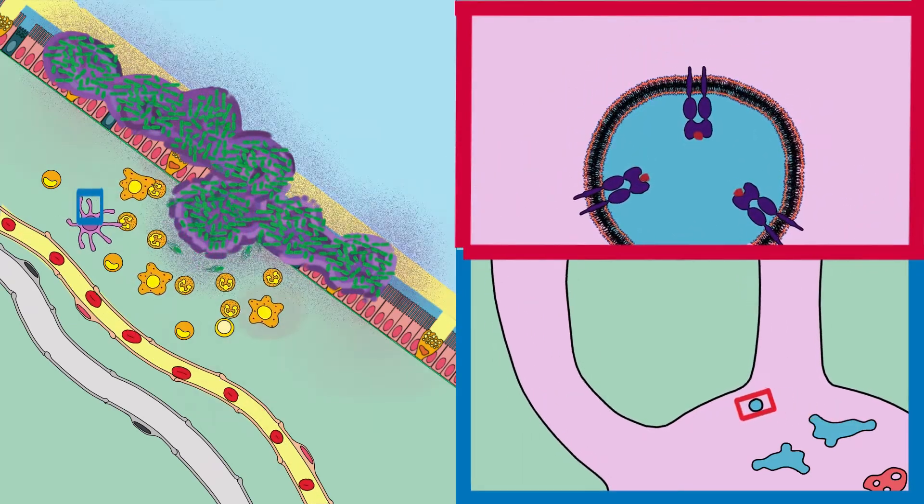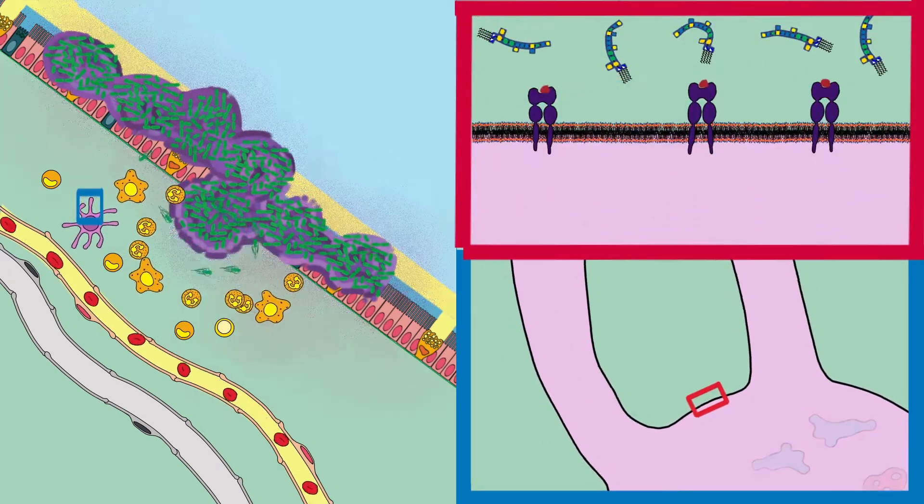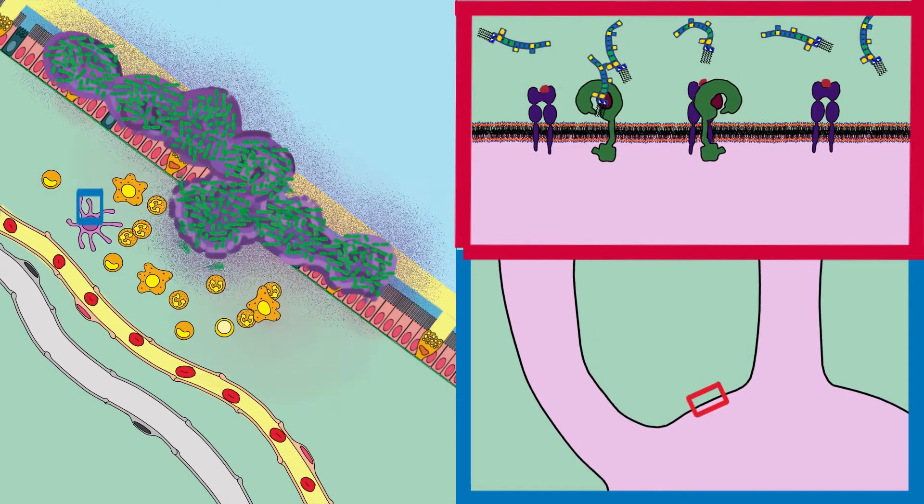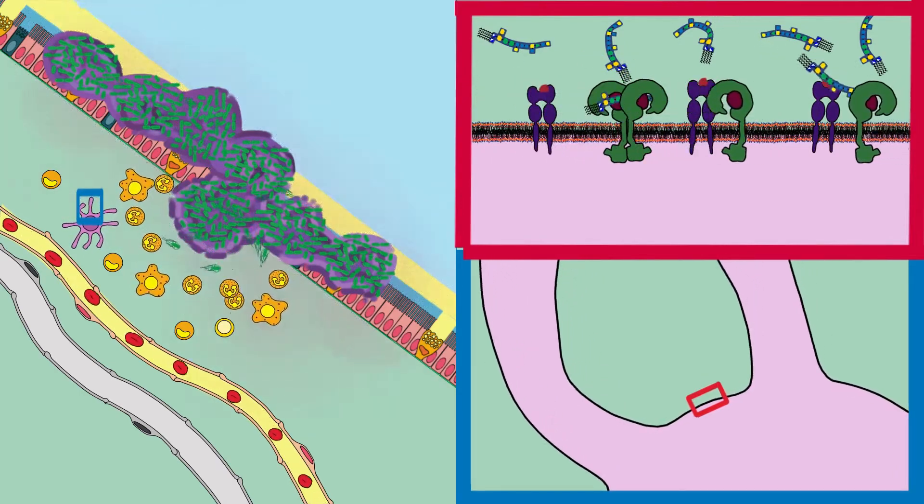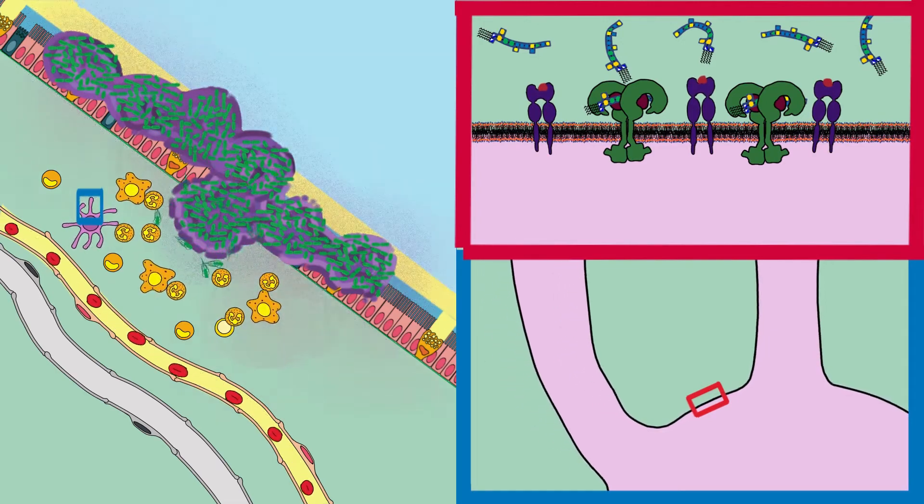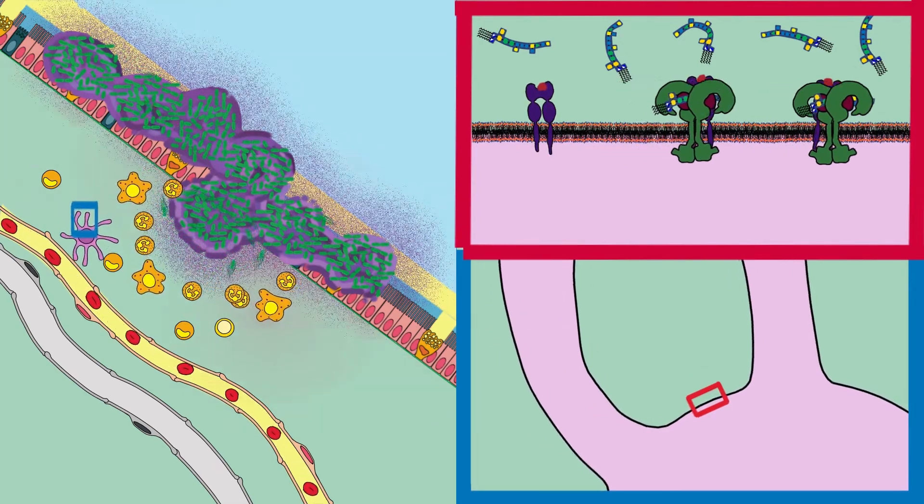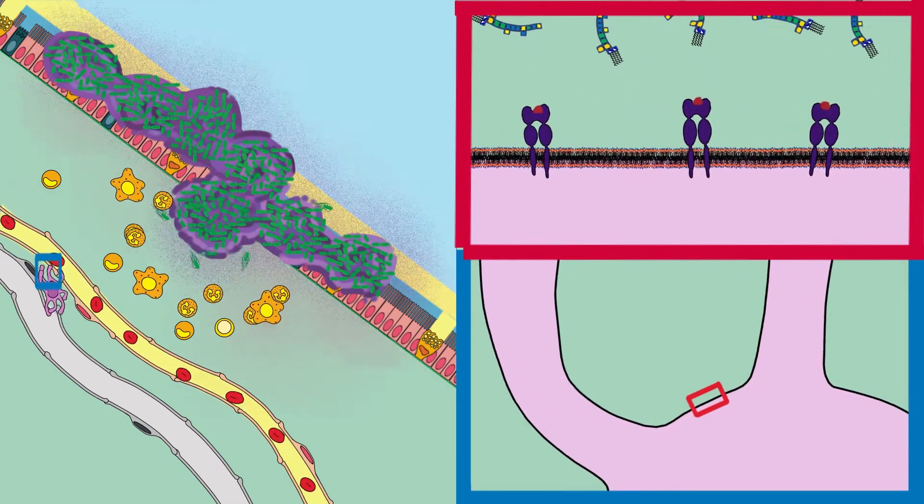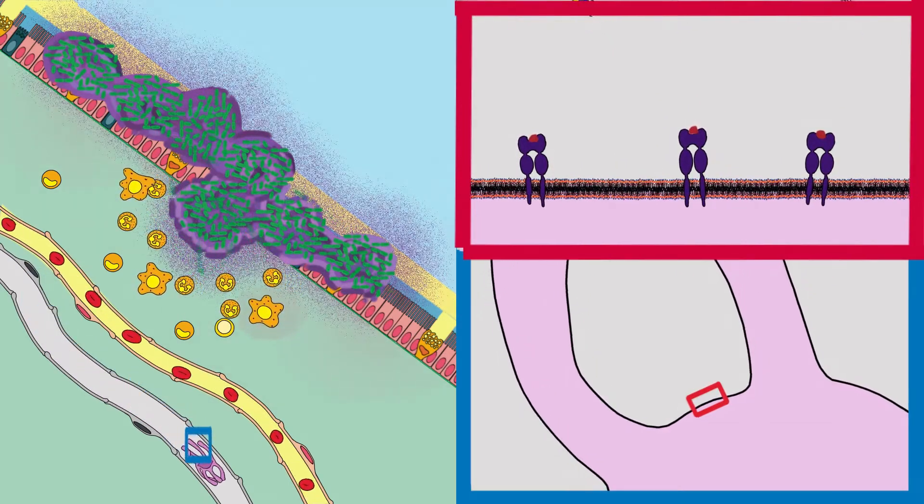When a dendritic cell is in an area of infection, it uses different receptors to identify if the pathogen is a virus or a cell. Once it identifies that the infection is caused by bacteria, the dendritic cell responds by heading towards the lymphatic ducts to reach the nearest lymph node.